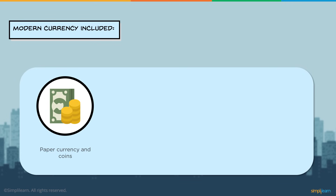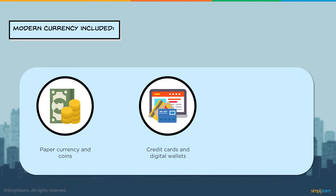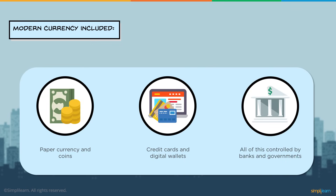Modern currency includes paper currency and coins, credit cards and digital wallets — for example, Apple Pay, Amazon Pay, Paytm, PayPal, and so on. All of this is controlled by banks and governments, meaning there is a centralized regulatory authority that limits how paper currency and credit cards work.